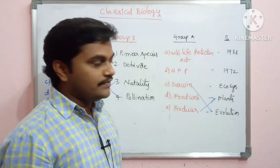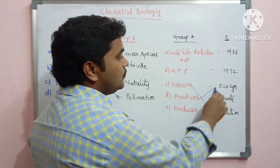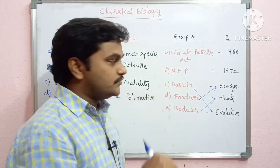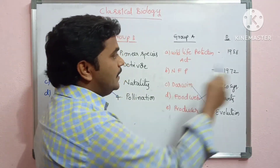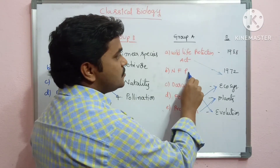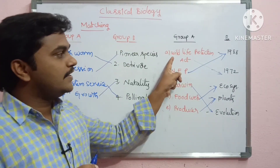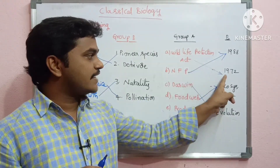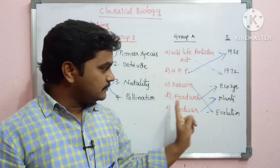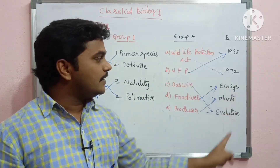We will talk about economic evolution and ecosystem of food chain. The legislation includes the Oil Life Protection Act 1972 and the National Forest Policy 1988. The answer keys are: B key 1, C key 5, D key 3, E key 4 — matching the same format.